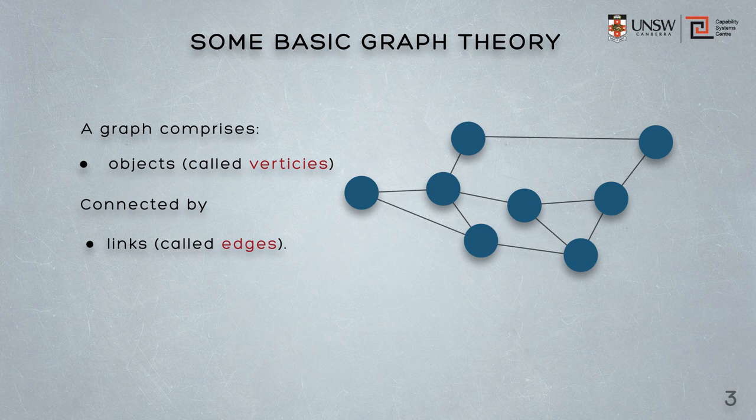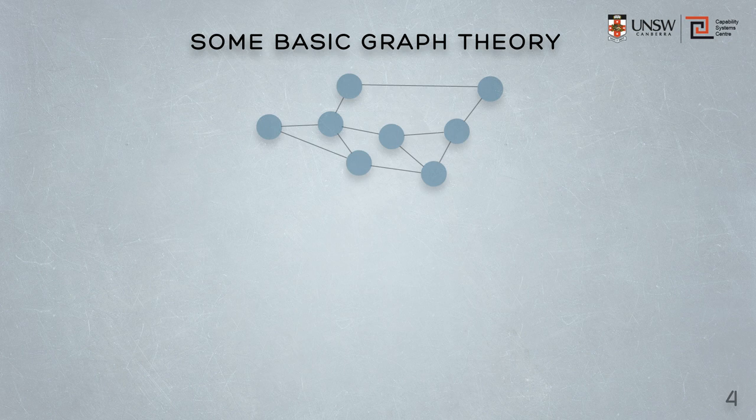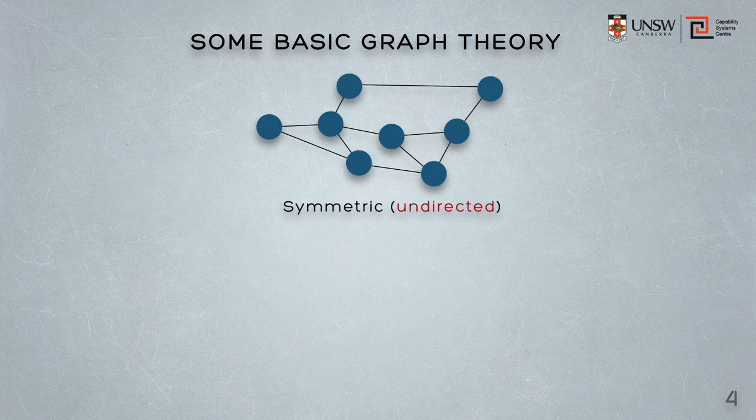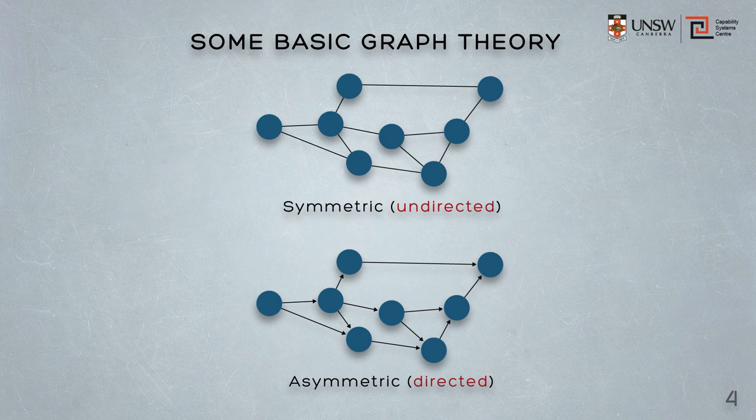The links between vertices may be undirected, and the graph is called symmetric, when the relationship is in either direction, or directed — the graph is called asymmetric — when the relationship is one direction only. The graph at the top of this slide is symmetric; the graph at the bottom is asymmetric — it's a directed graph.